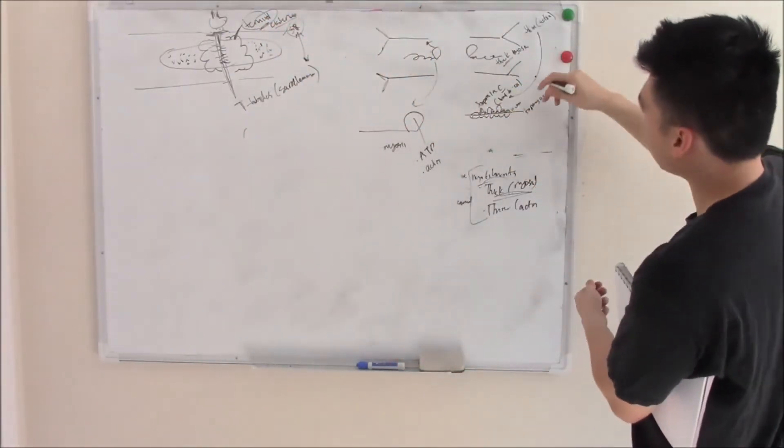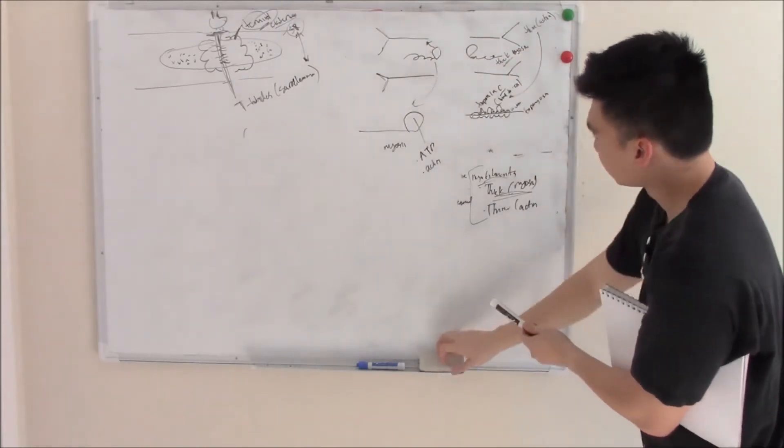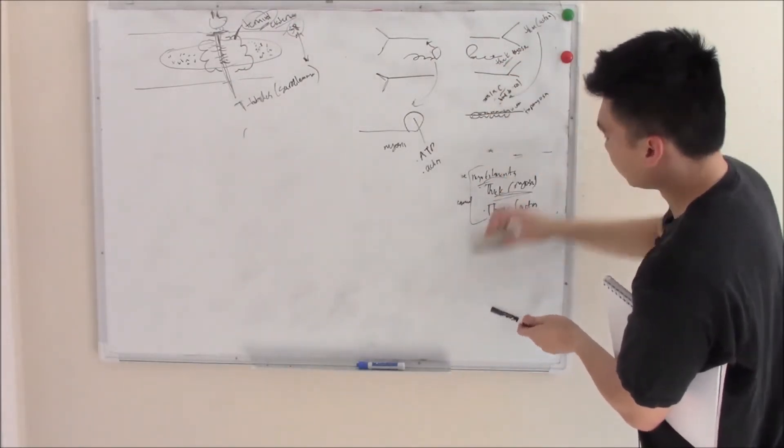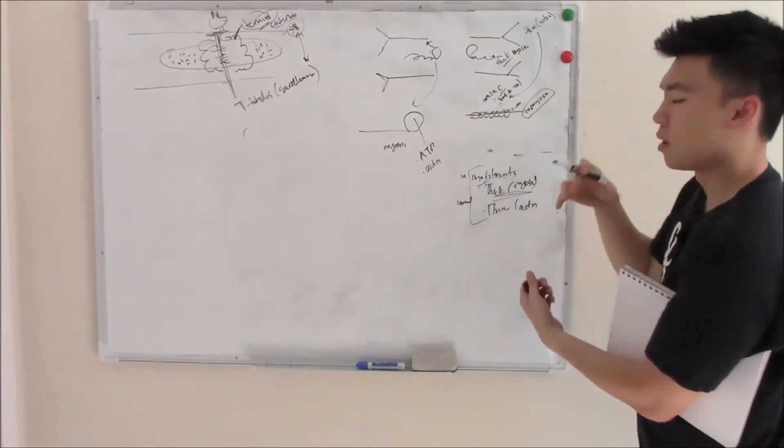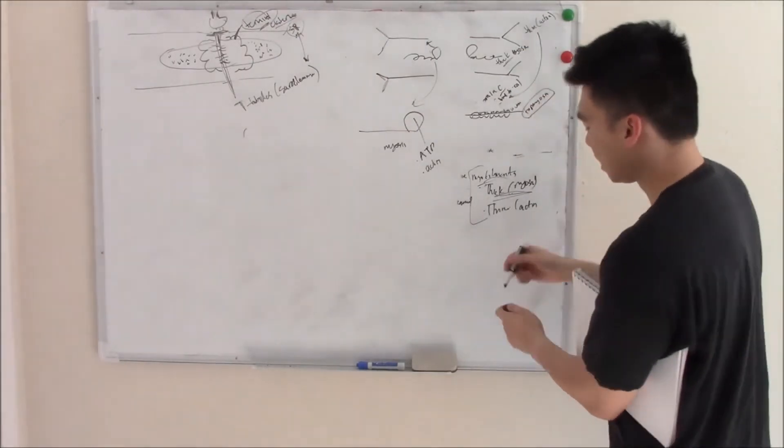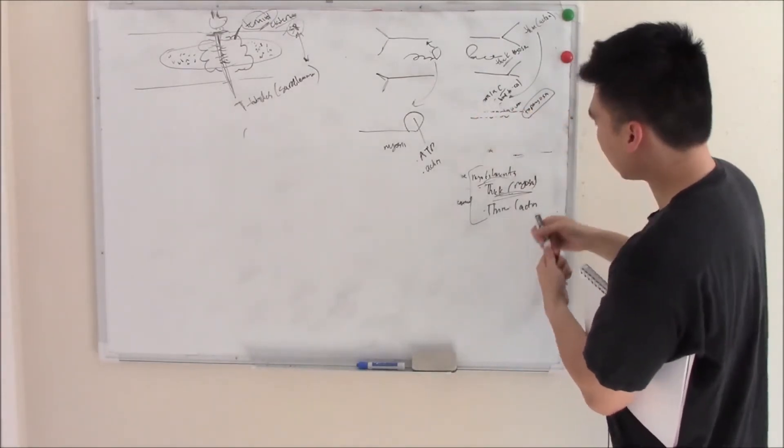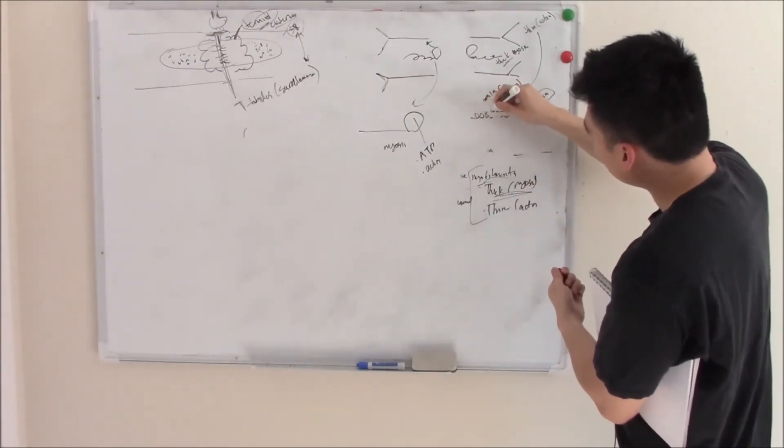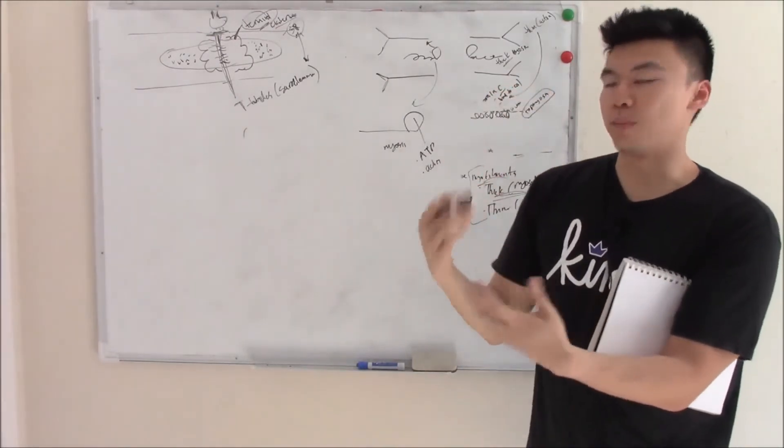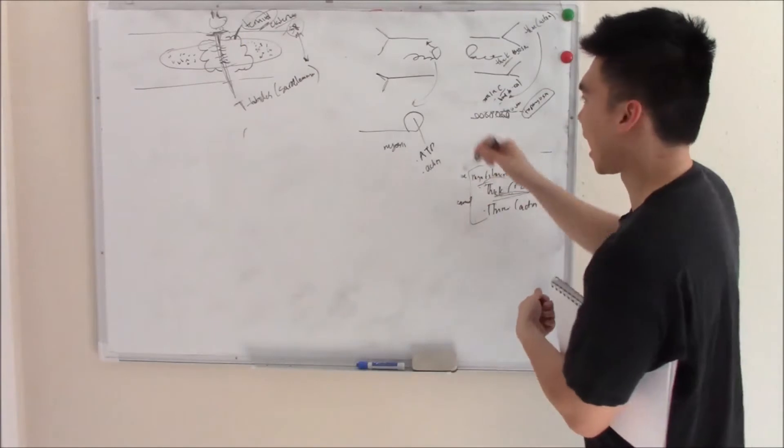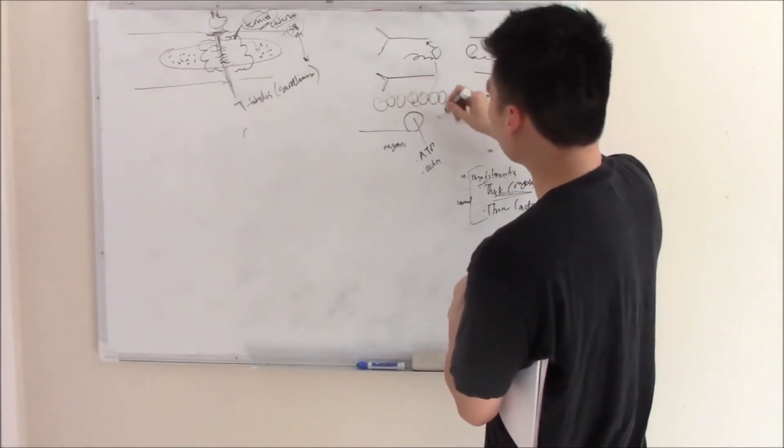When calcium is released, calcium binds to troponin C. This causes a conformational change in tropomyosin, making it move away and uncover actin. Now myosin can finally bind, so it gets ready to bind to actin.